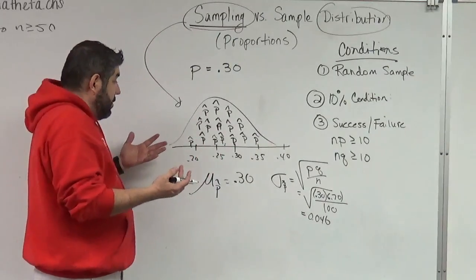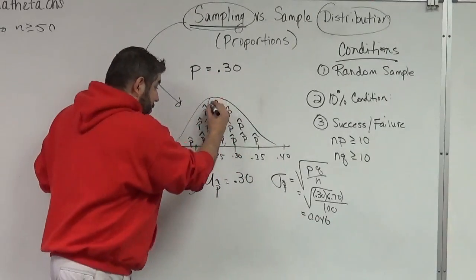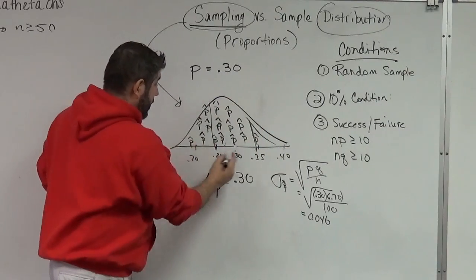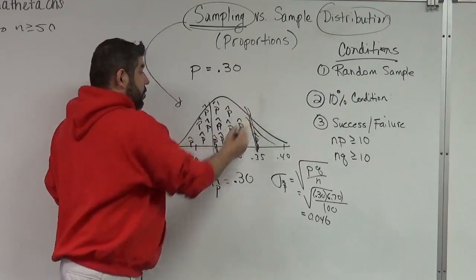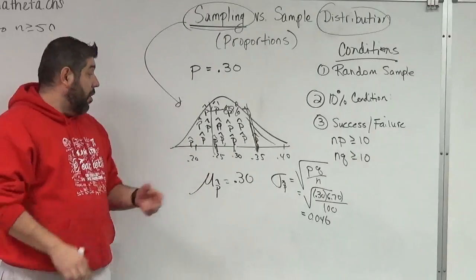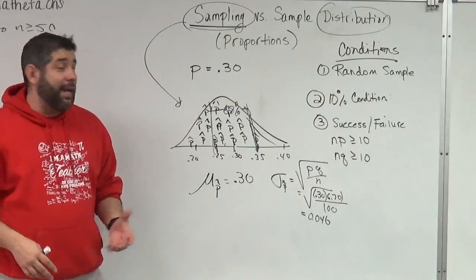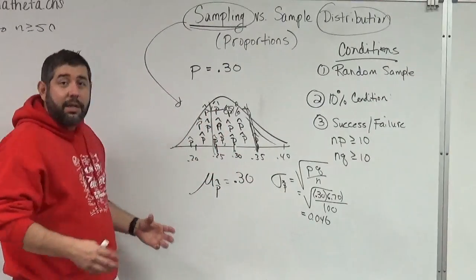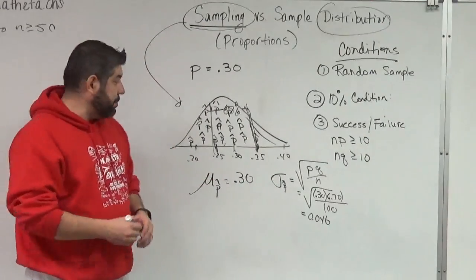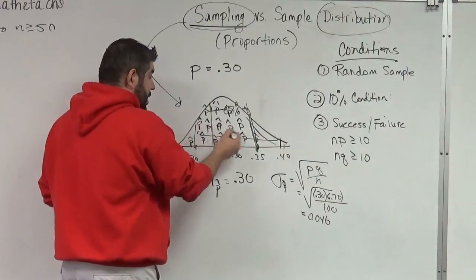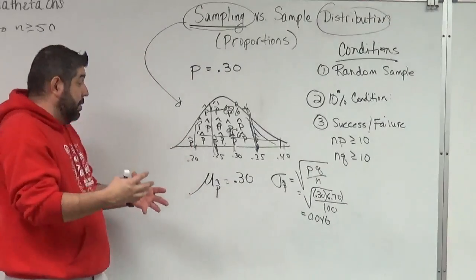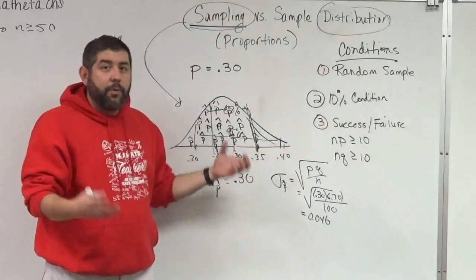So now I've got a normal model. Using the empirical rule: within one standard deviation, about 68% of those samples are going to have awesome percentages between 25% and 35% of people being awesome. Two standard deviations away from the mean — 95% of those samples of 100 people will have awesome percentages between 20% and 40% of those people being awesome.